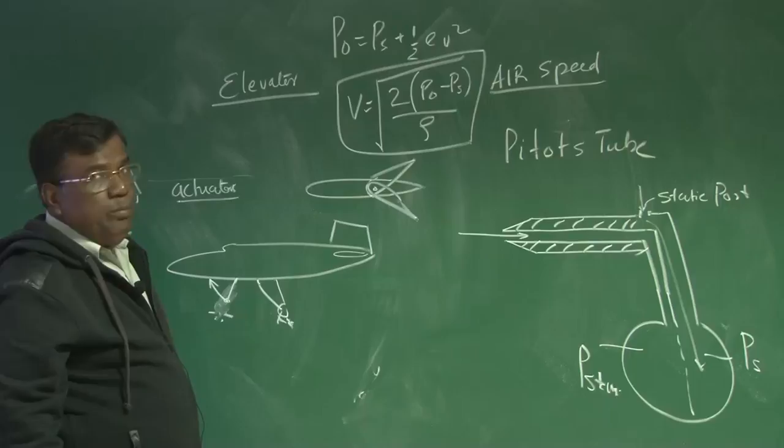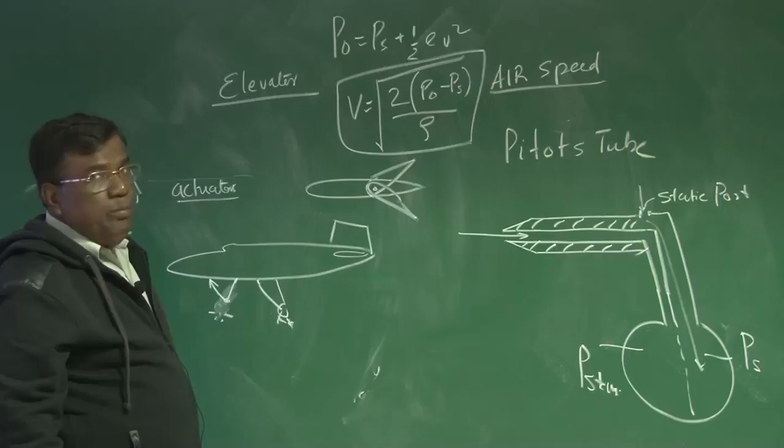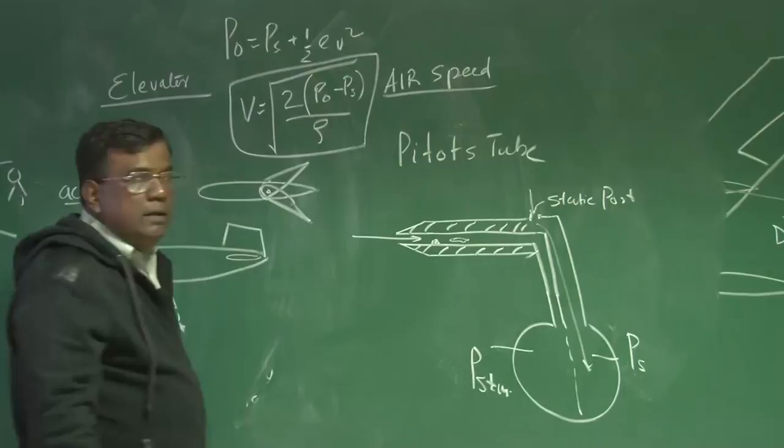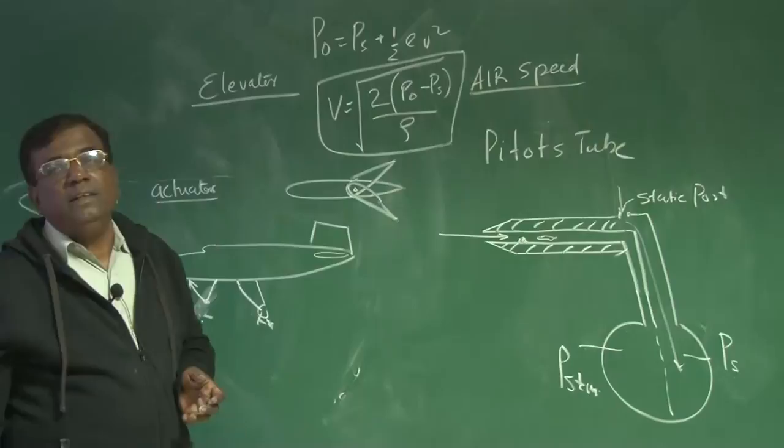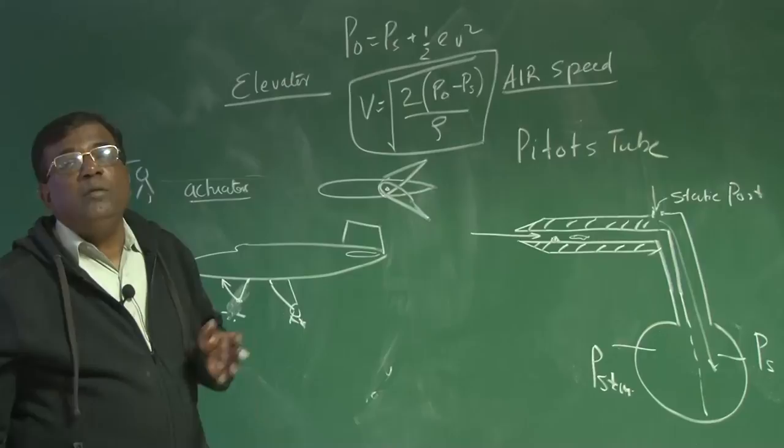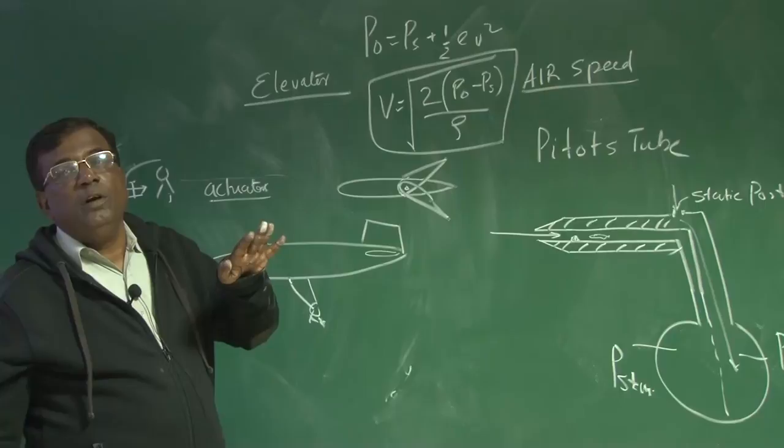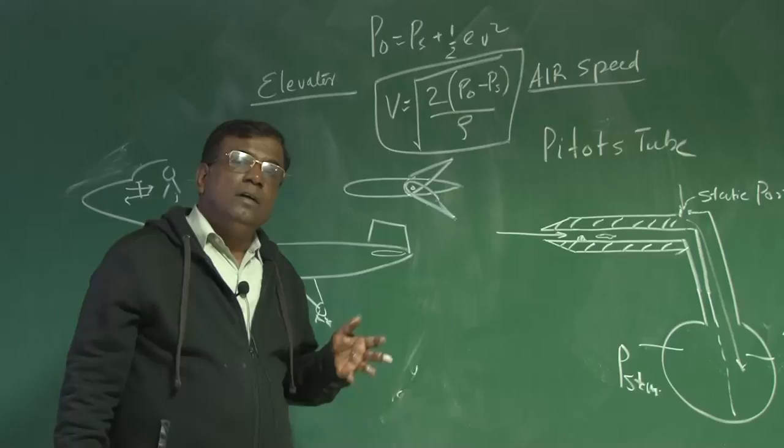Now imagine, suppose you have a poor maintenance and some deformation has come here or some insect may be lying here, right? So, it will not give you correct speed at which you are flying. So, say there is some obstruction and you are flying at actually 100 meter per second or 50 meter per second. It is showing you are flying at 30 meter per second. What pilot will do? Pilot will immediately try to increase angle so that he gets more lift and in the process, it may lead us to a stall situation. So, small item, Pitot's tube, so important from maintenance point of view.